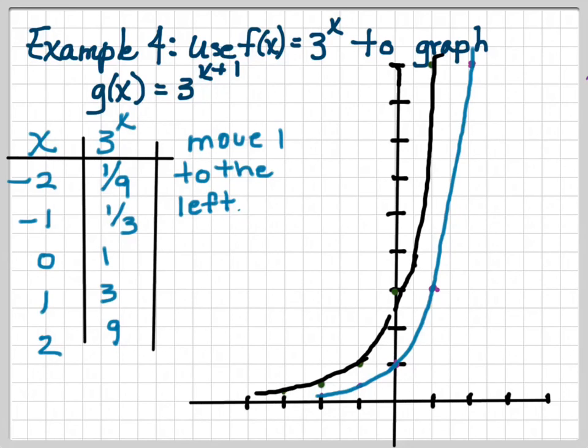Or I could just take the x coordinate, and subtract one from it. So my first point would be minus 3, 1 ninth, so on and so forth. So go ahead and do your checkpoint number four.